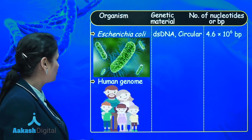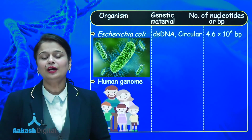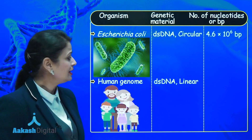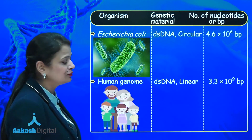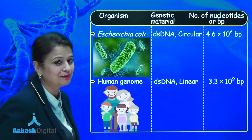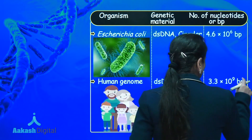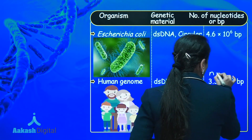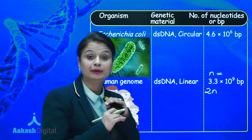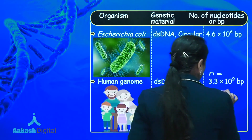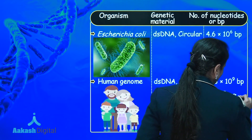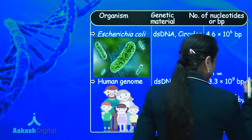The last example is humans. In humans, there is double-stranded, linear DNA consisting of 3.3 × 10⁹ base pairs. Keep in mind that this base pair content is present in a haploid cell. If we talk about a diploid cell, it becomes double, giving 6.6 × 10⁹ base pairs.